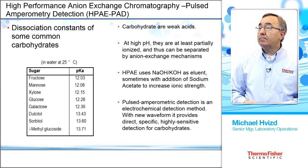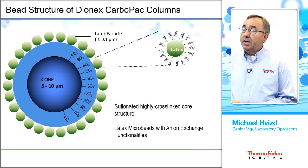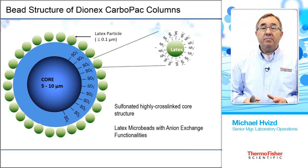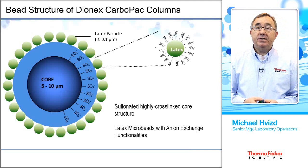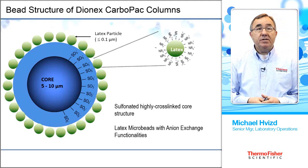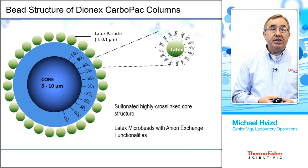Here's an illustration of the column technology developed at Dionex. That column technology has stayed the same over many years. It's basically a polystyrene divinylbenzene core. We surface sulfonate that resin bead, and then attach our ion exchange sites — quaternary amine sites — which are part of the latex particle on the outside of the bead. These latex microbeads are the anion exchange functionalities that do all the work.